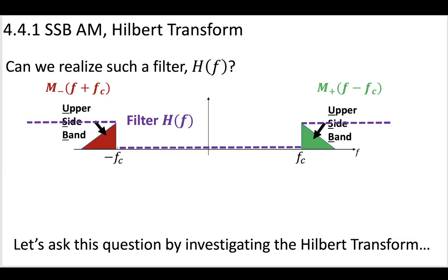We want to make a filter so that we can transmit just the upper sideband. This filter is going to have some transfer function H(F), and this transfer function filter is going to completely remove the lower sideband. This lower sideband will be completely removed by this transfer function.